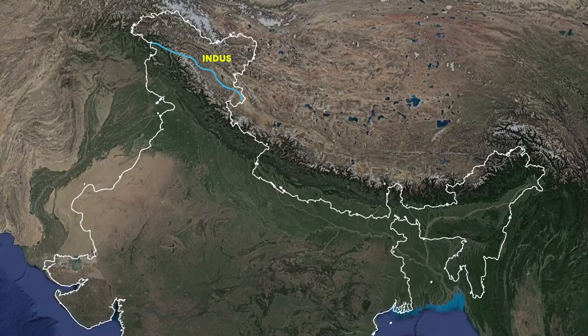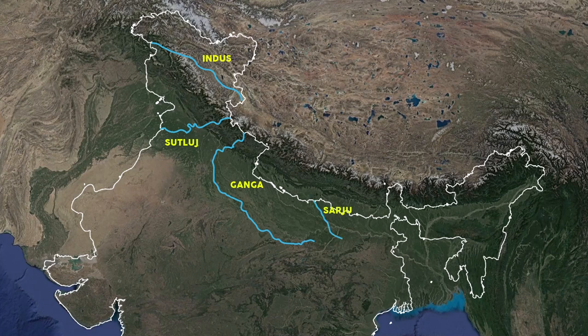The Indus, Sutlej, Ganga, Swaraju (also known as Kali), Arun River (a tributary of the Gosi River), Tista, and Brahmaputra are some of the important antecedent rivers originating from beyond the greater Himalayas.